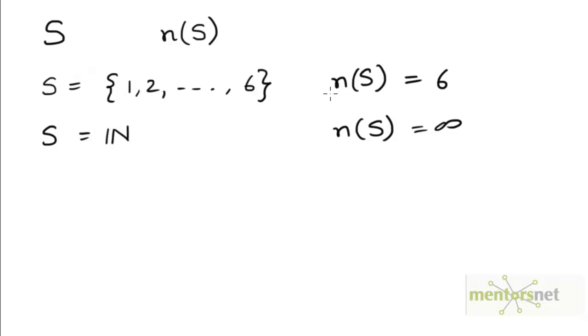So if the number of elements in the set S is some finite number, we say that S is a finite set. If the number of elements in the set S are infinite, we say that the set is an infinite set.